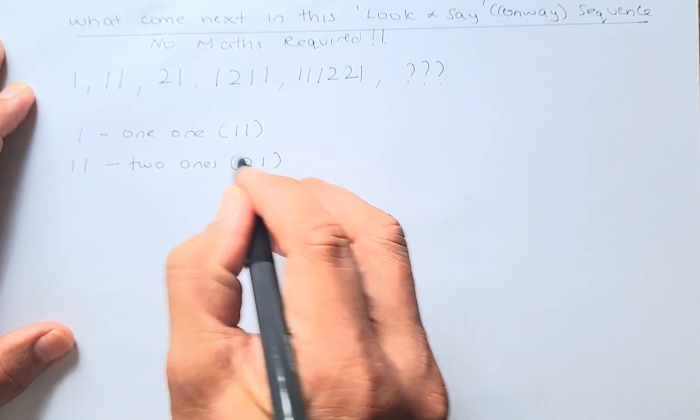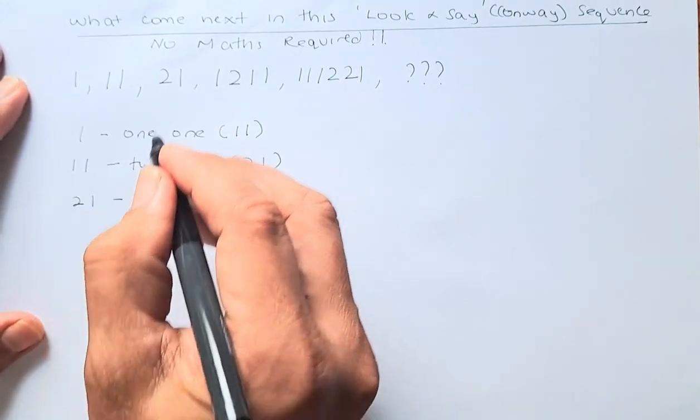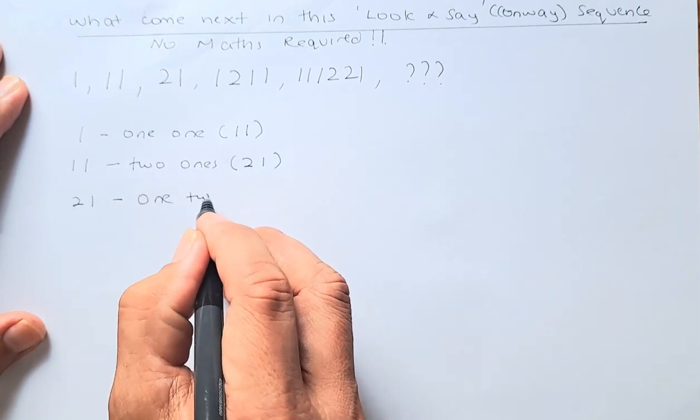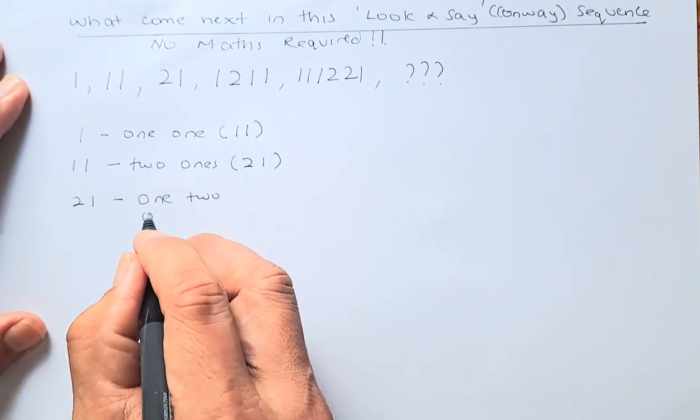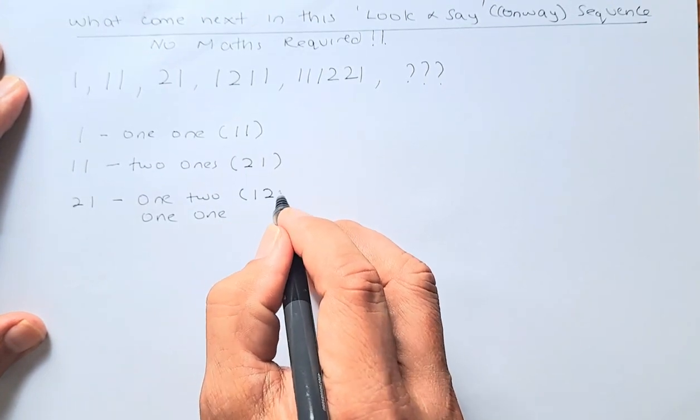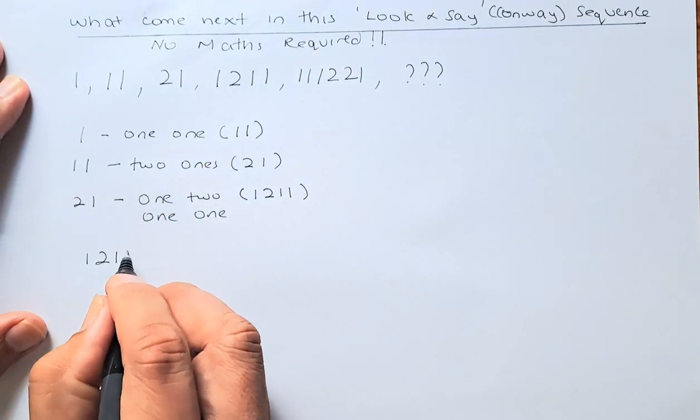Two one, so that's the next number, 2 1. This is written as one two and one one, so it's going to be written as 1 2 1 1. So the next term is one two one one.